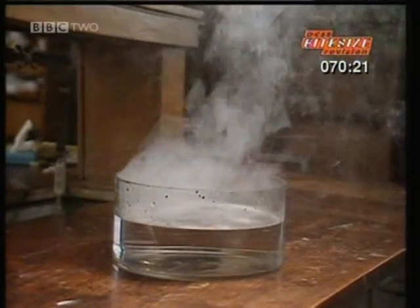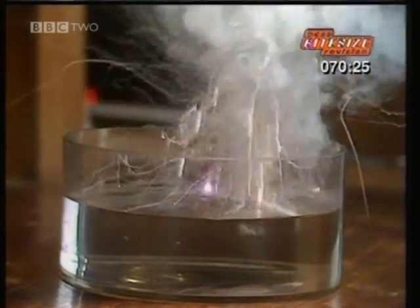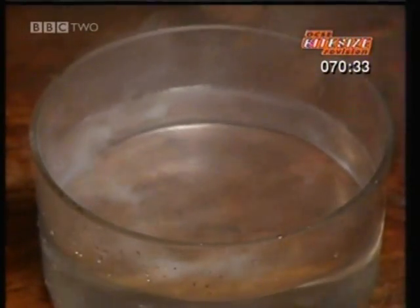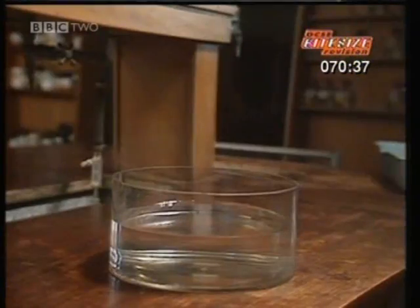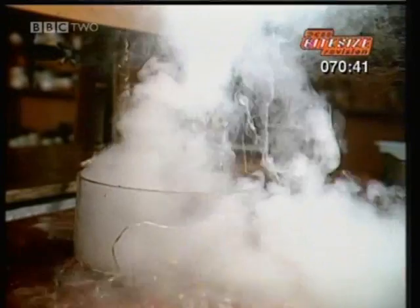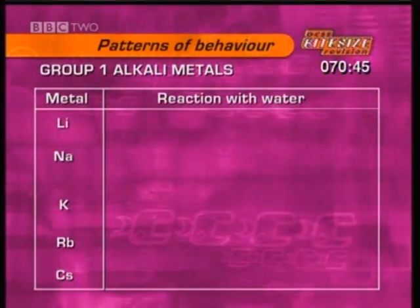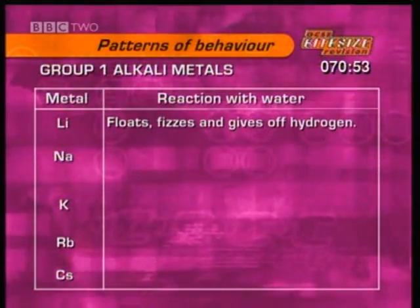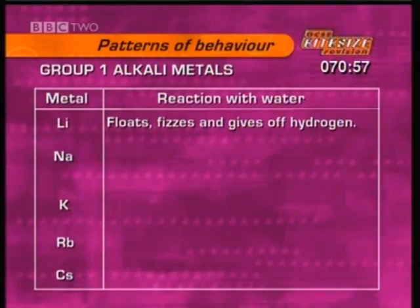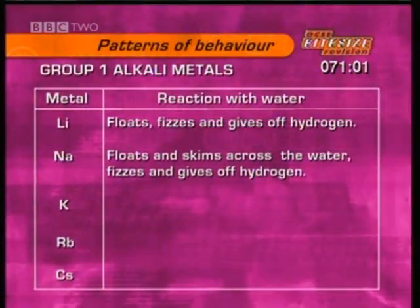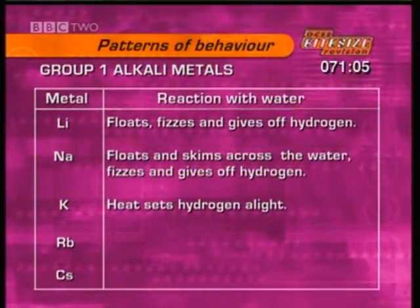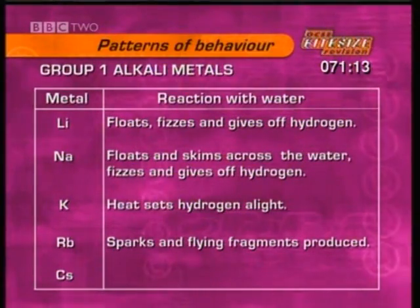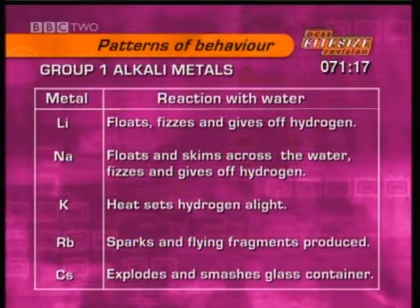The next element is rubidium. This time we put a safety screen between us and the reaction. You can see that things gradually become more terrifying as we go down the group. Let's try caesium, our fifth alkali metal. As you saw, all the alkali metals are very reactive and their reactivity increases as we go down the group. When added to water, lithium floats and fizzes, giving off hydrogen. Sodium also floats but skims across the water surface, also fizzing and giving off hydrogen. Potassium floats as well, but so much heat is produced it sets the hydrogen alight. Rubidium reacts very violently, producing sparks and flying fragments. And caesium explodes violently, smashing the glass container.